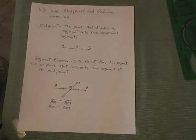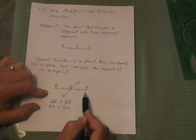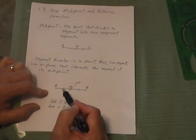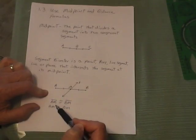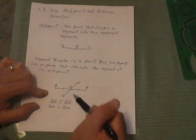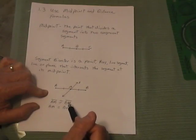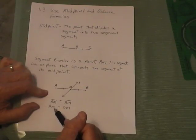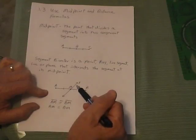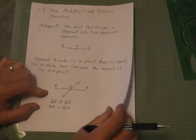A segment bisector is a point, ray, line segment, line, or plane that intersects the segment at its midpoint. For example, we have segment AB with midpoint M. The tick marks show it's equidistant, and line L intersects segment AB at that midpoint. So segment AM is congruent to segment BM, and the length of AM equals the length of BM because L is the bisector of segment AB — it cuts it in half.